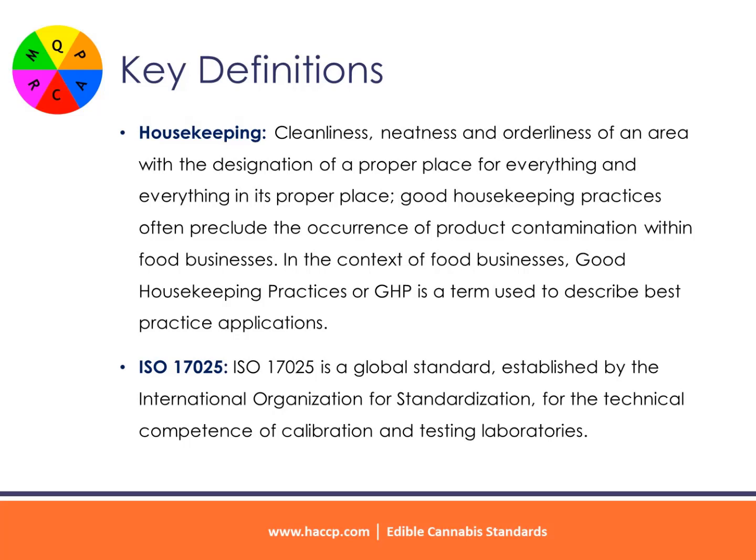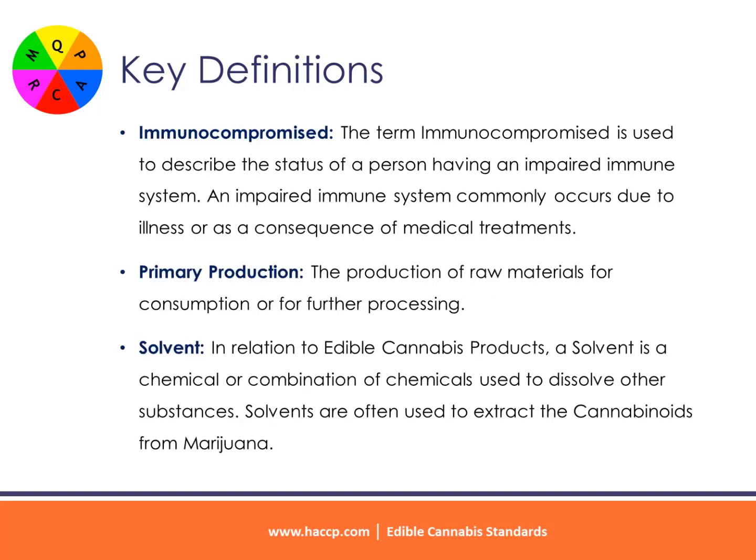In the context of food businesses, good housekeeping practices (GHP) is a term used to describe best practice applications. ISO 17025: a global standard established by the International Organization for Standardization for the technical competence of calibration and testing laboratories.